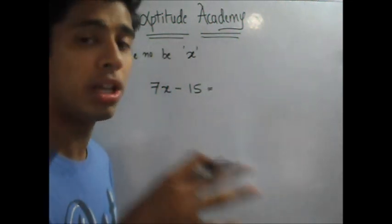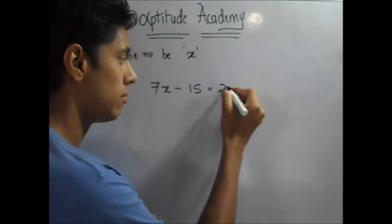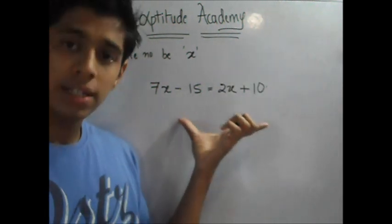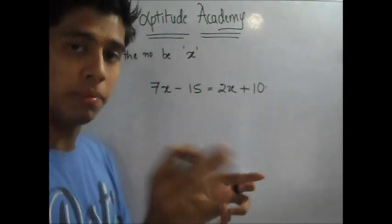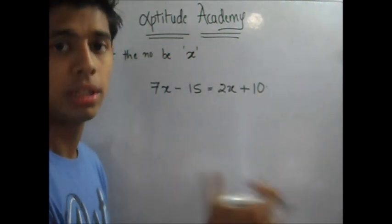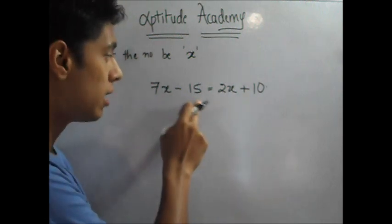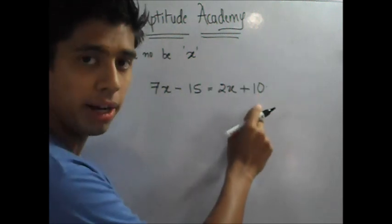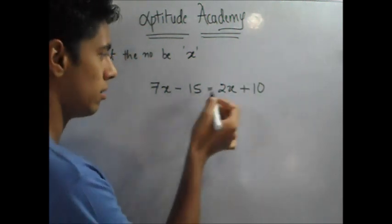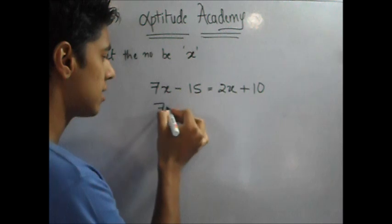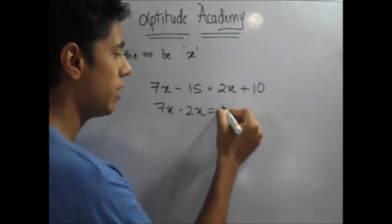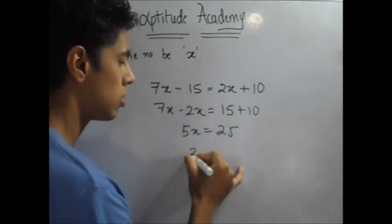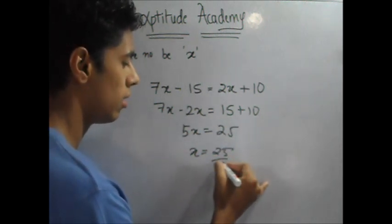so 15 subtracted from 7X, the result is 10 more than twice the number. What is twice the number? 2X. 10 more, so plus 10. Now the first step is after framing this, you read your problem statement and find out whether this matches it or not. The problem statement says 15 when subtracted from 7 times the number, the result is twice the number plus 10. Now just solve the equation. 7X minus 2X, take 15 on this side, is equal to 15 plus 10. So this is 5X equals 25. So X is equal to 25 by 5, which is 5.